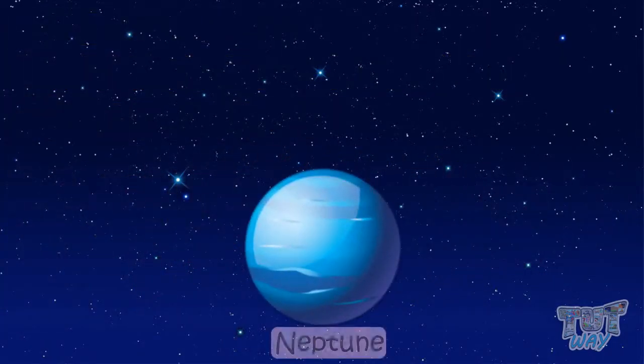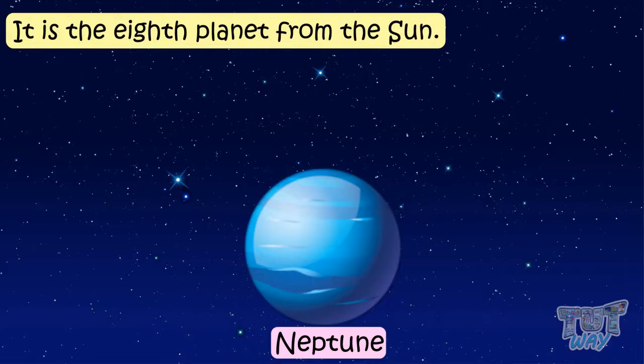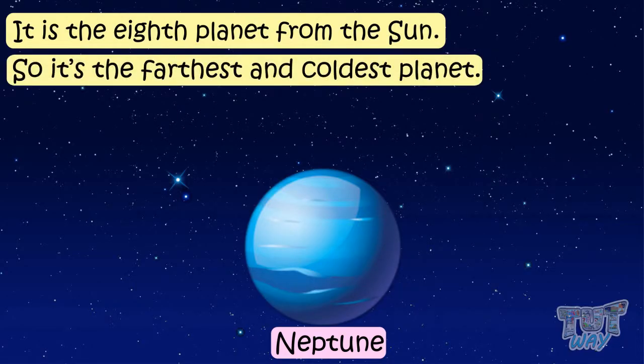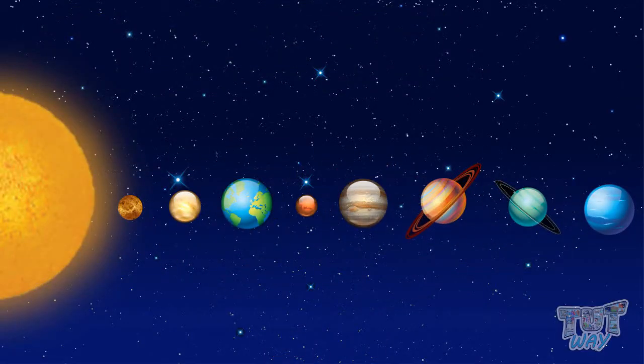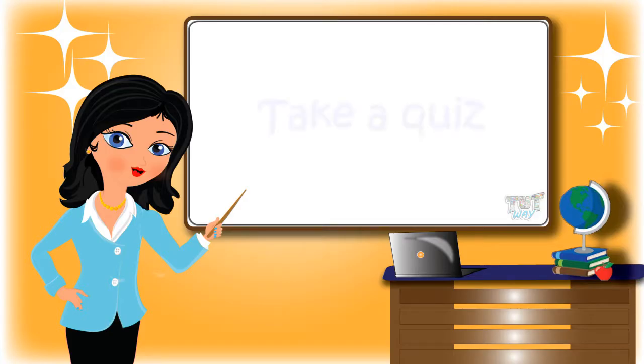Neptune. It is the eighth planet from the Sun so it's the farthest and coldest planet. So kids, today we learned about the sky and the heavenly bodies we see in the sky. Now go ahead and take a quiz to learn more. Bye!